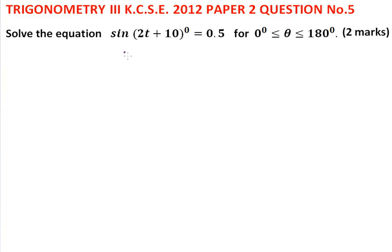Solve the equation sin(2t + 10)° = 0.5 for 0° ≤ θ ≤ 180°.